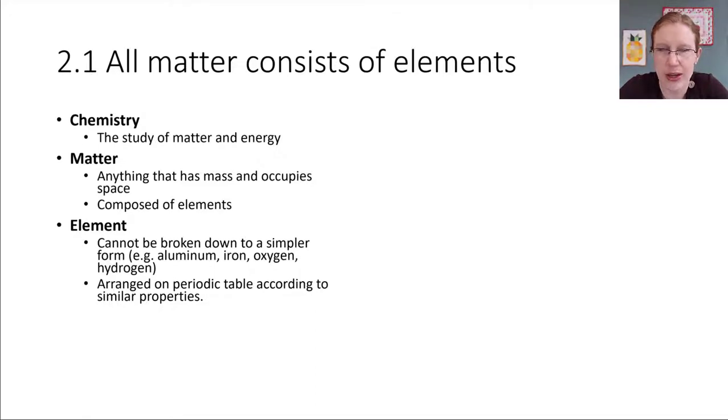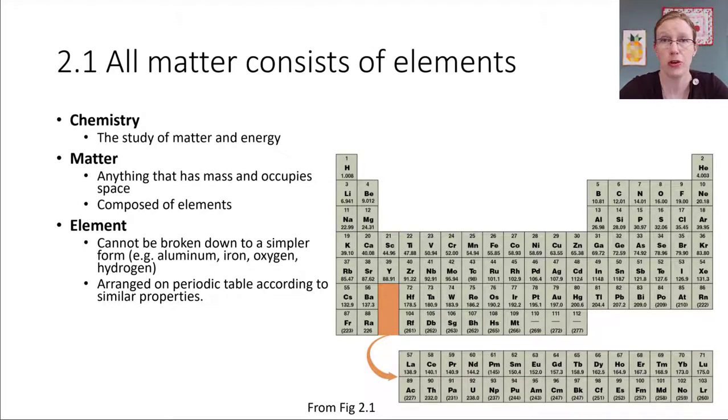Each one behaves a little bit differently. So chemists like to arrange elements according to their properties, according to how they behave, how they interact with each other. And they are arranged on a periodic table. This is what a periodic table looks like, the periodic table of the elements. Each element is represented by one of these little boxes with its own symbol, like hydrogen with a capital H. And there are some other numbers on the periodic table telling us information about the different elements.